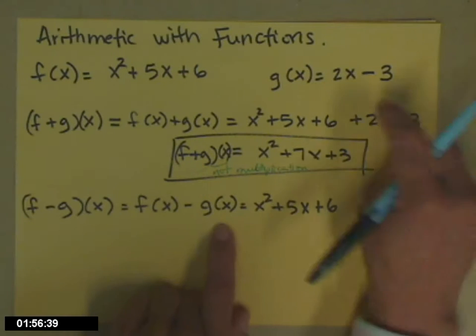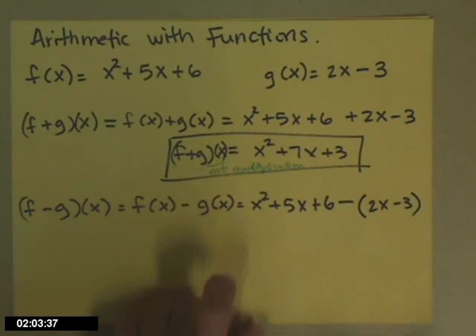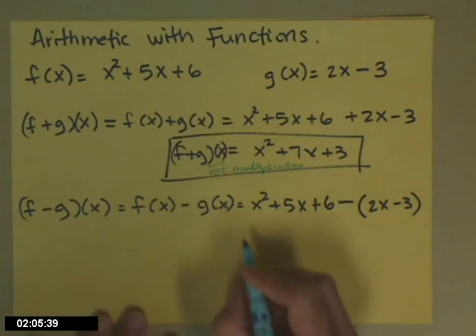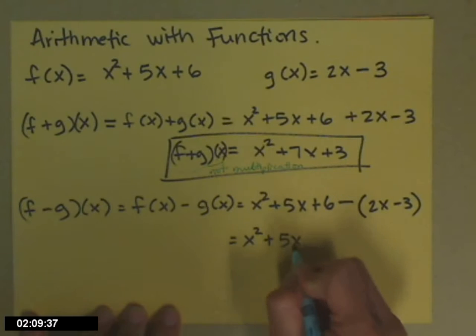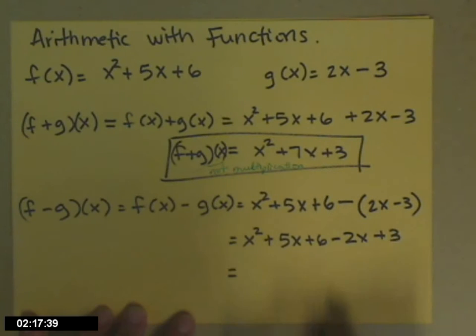I'm subtracting off all of g of x. So g of x has more than one piece, so I'm going to put it in parentheses so that I'm very careful about taking that negative sign through. So we're going to get x squared plus 5x plus 6 minus 2x, and then minus a negative 3 makes that plus 3. Then again, combine like terms. So x squared plus 3x, 6 plus 3 is plus 9.